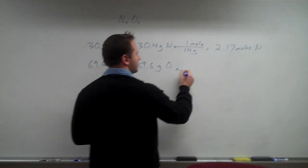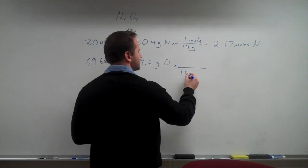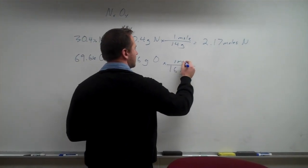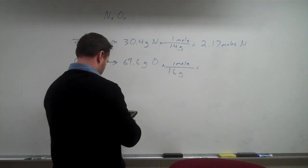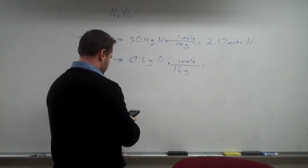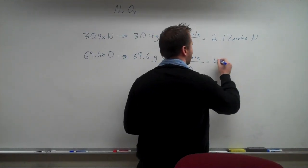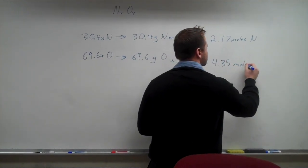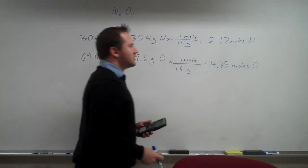And then we find the number of moles of oxygen here. Oxygen is 16 grams per mole, and that works out to be 4.35 moles of oxygen.